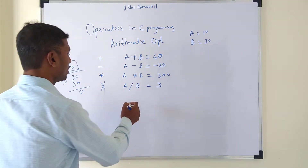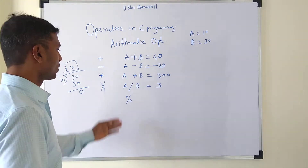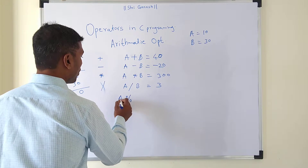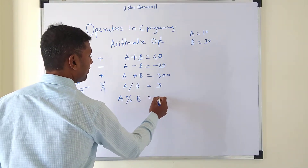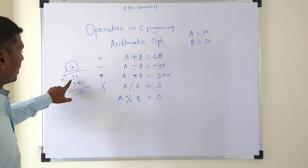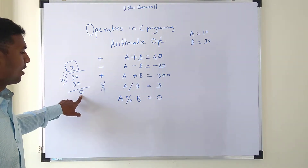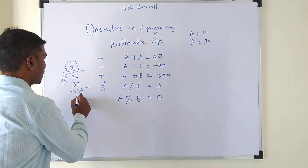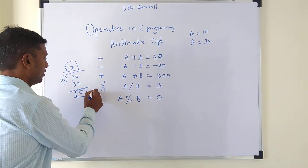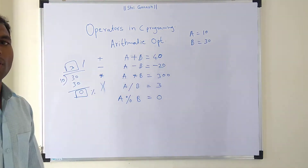Next is the modulus operator, represented by the percentage symbol. So if we do a mod b, the answer will be 0, because when dividing 30 by 10 the remainder is 0. So the modulus operator gives you the remainder part, while the division operator gives you the quotient part.